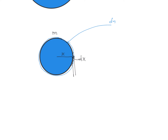We can identify how much work we need to do for this process. The work done equals dm into the potential difference, which is the potential to take a particle from infinity to the surface — that is the potential on the surface of the solid sphere. The potential on the surface is minus Gm by x, where m is the current mass and x is its current radius.